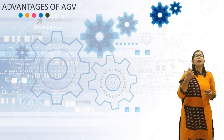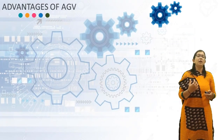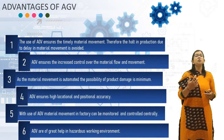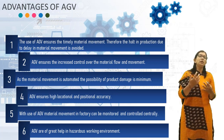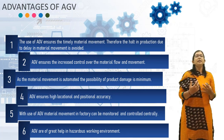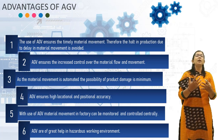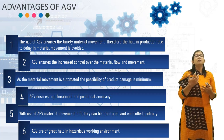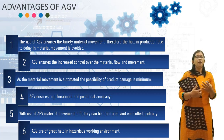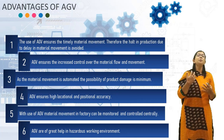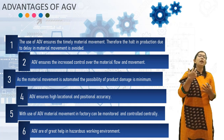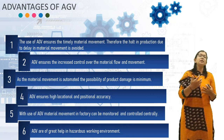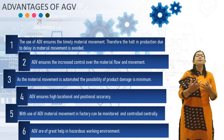Now we will discuss the advantages of Automated Guided Vehicles. The use of AGV ensures timely material movement, so halting of production due to delays in material movement is avoided. AGV ensures increased control over material flow and movement. Since material movement is automated, the possibility of product damage is minimum. AGV ensures high locational positional accuracy. With the use of AGV, material movement in the factory can be monitored and controlled centrally. Lastly, AGVs are of great help in hazardous working environments.